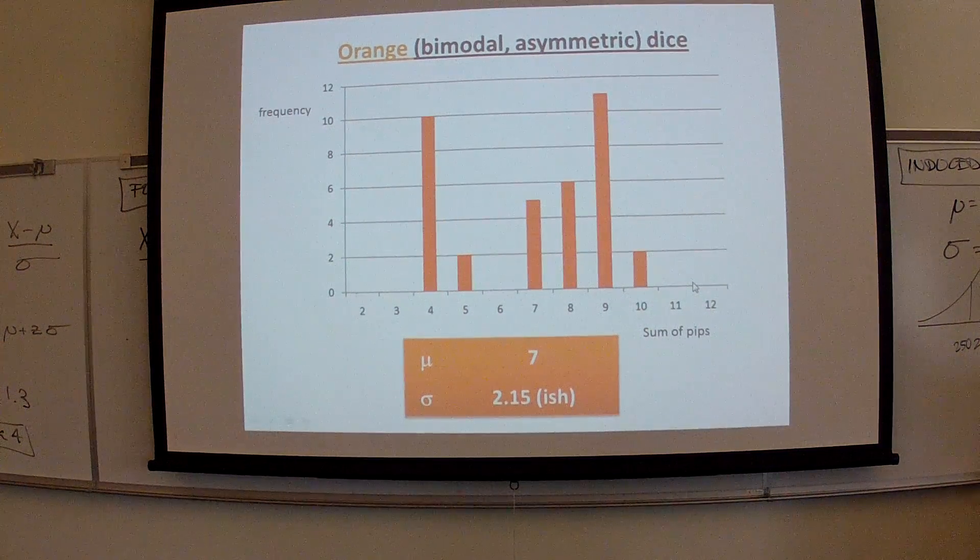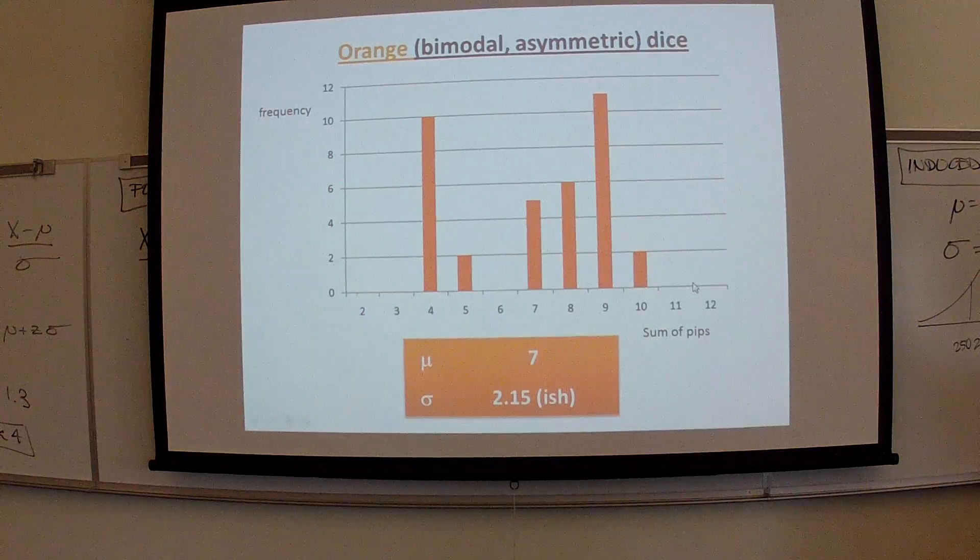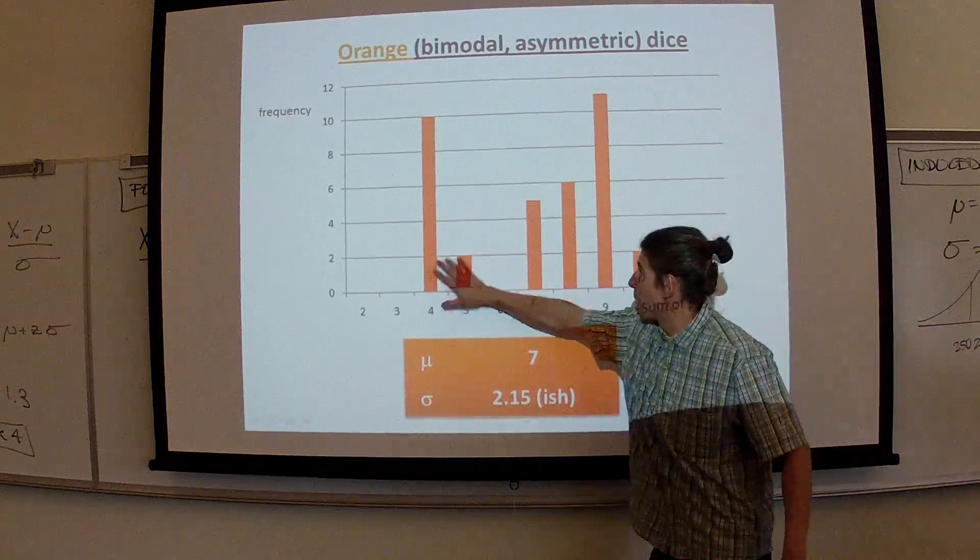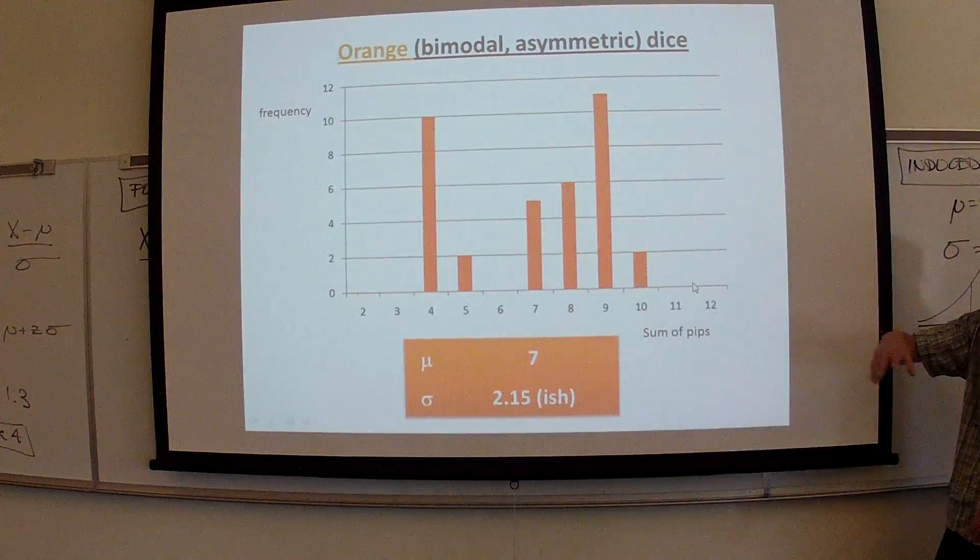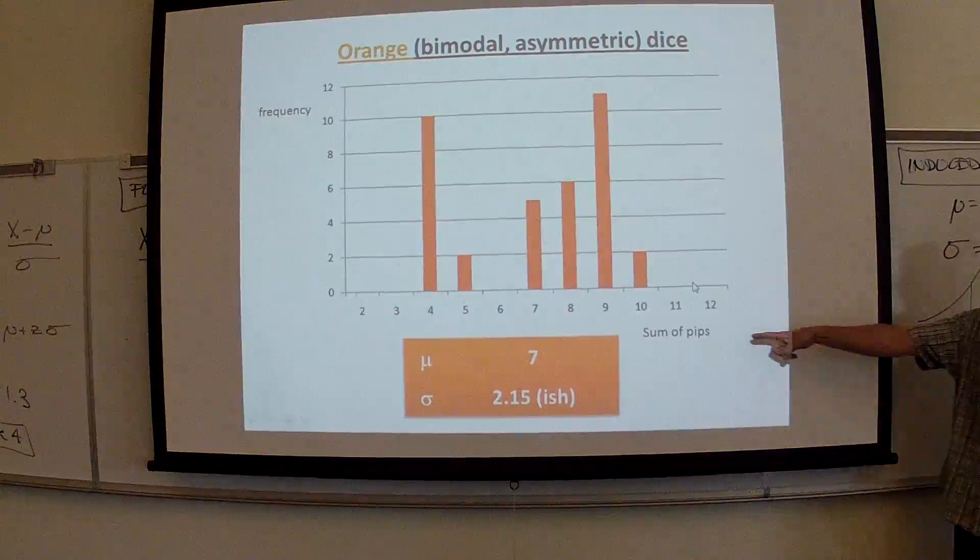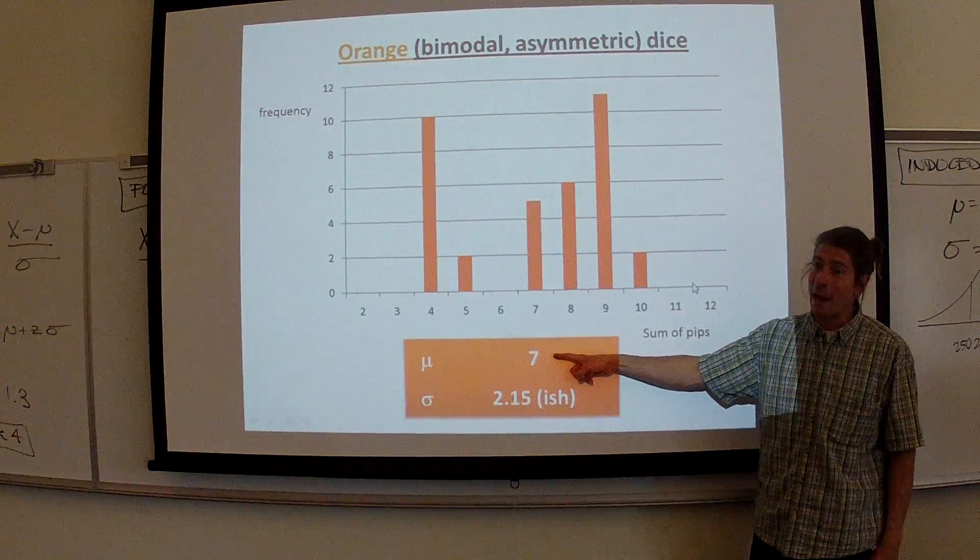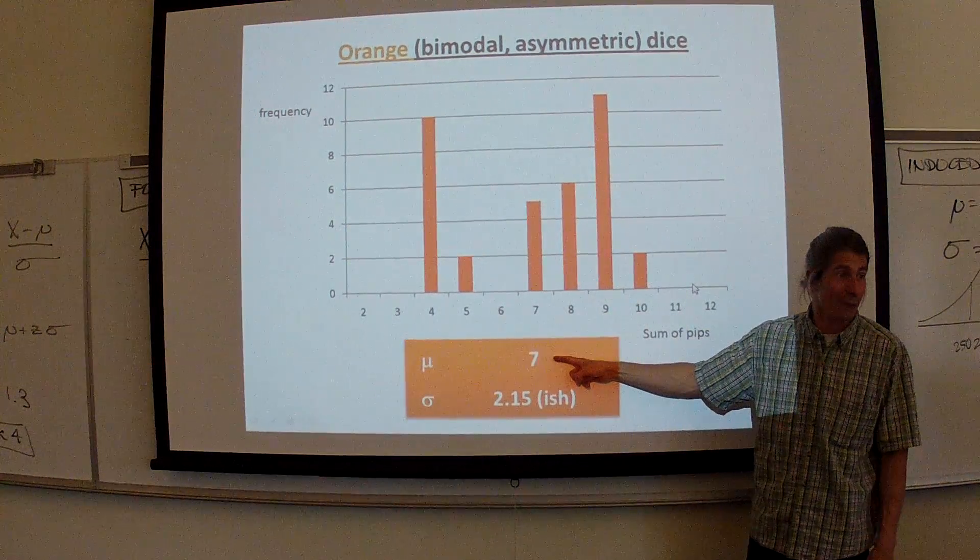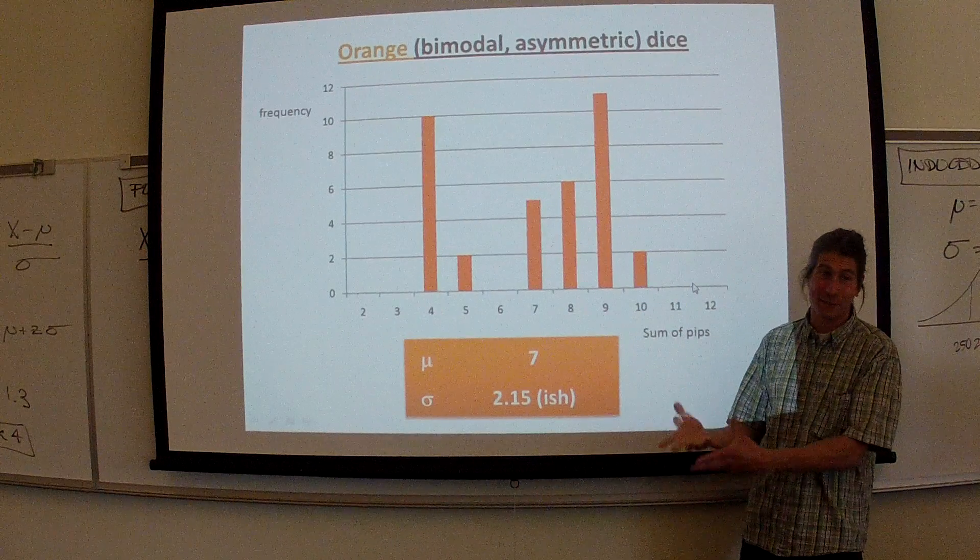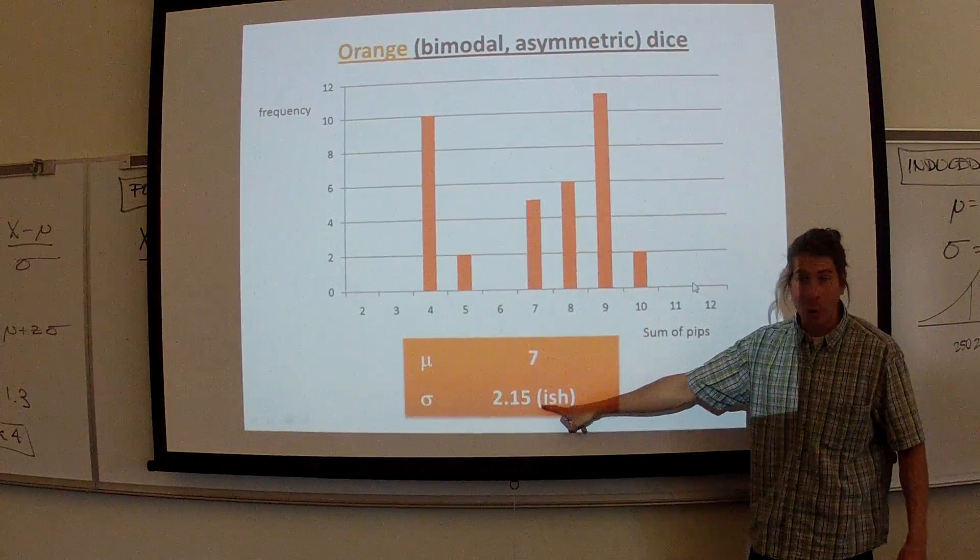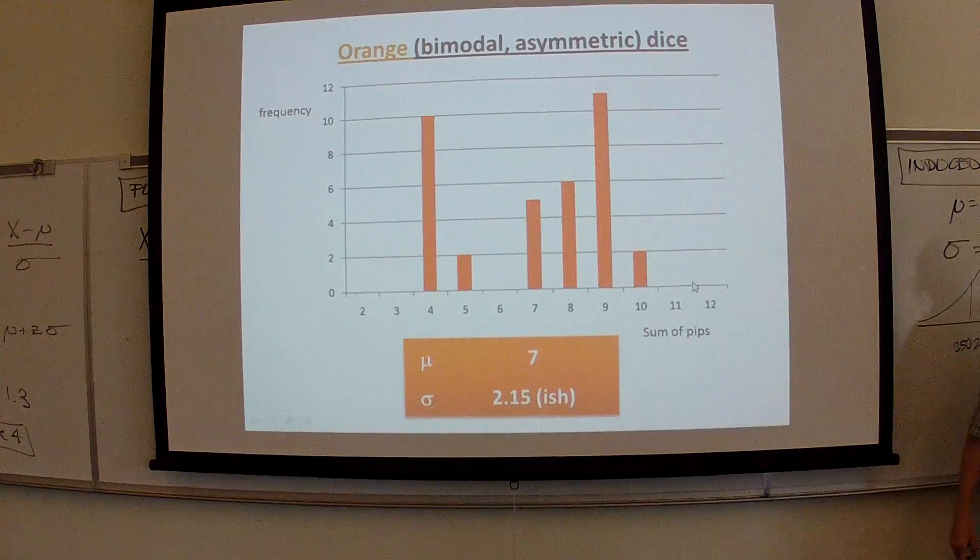Here's orange. This is one of my favorites. Just such a ridiculous looking distribution. So many gaps. You've got mode here, mode here with these gaps everywhere else. Yes. Your average is 7. But this is when you have to ask yourself, how useful is an average anyway? I mean, there's your average, right? It's not happening around the average. Really wide standard deviation around 2.15. There you go.